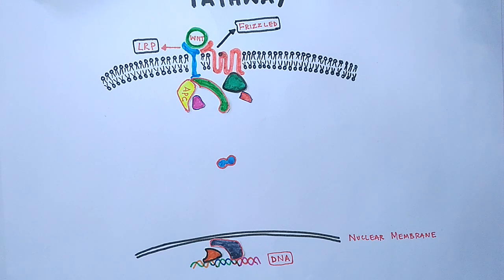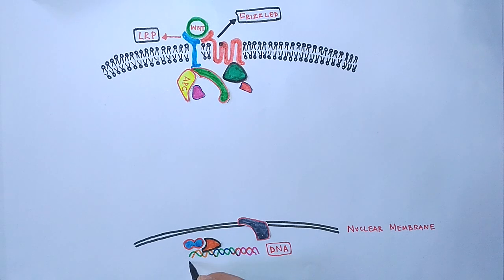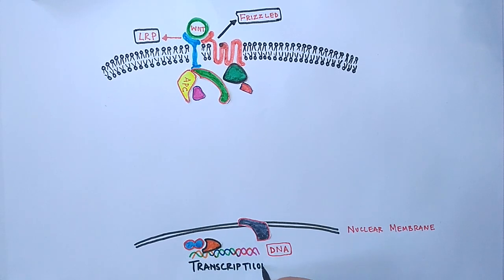Then we see the unphosphorylated beta-catenin accumulates in the cytosol and then migrates into the nucleus, where it binds to the LEF-TCF proteins and displaces the GROUCHO complex, with which the gene regulatory components are activated and we get the expression of WNT genes.